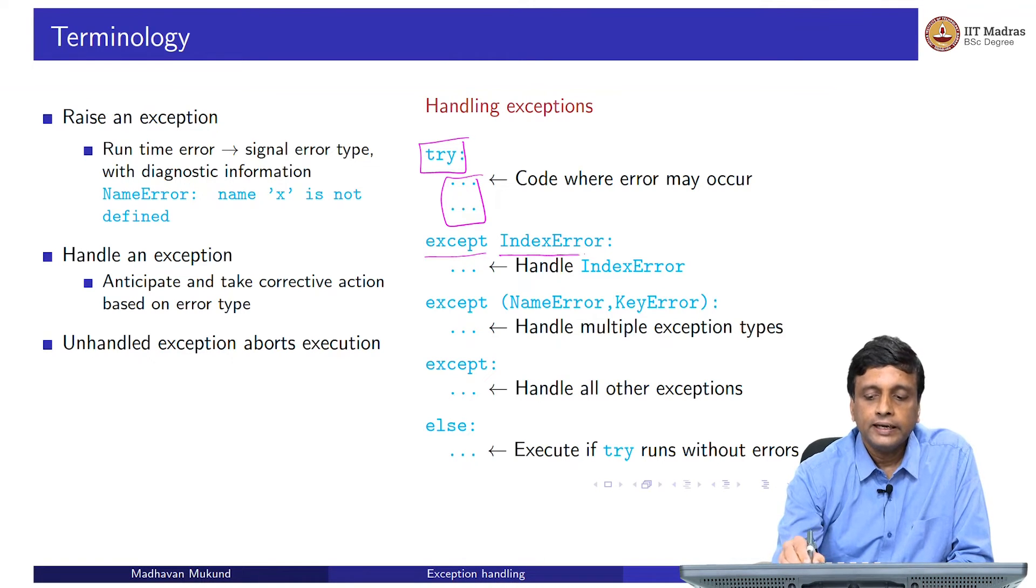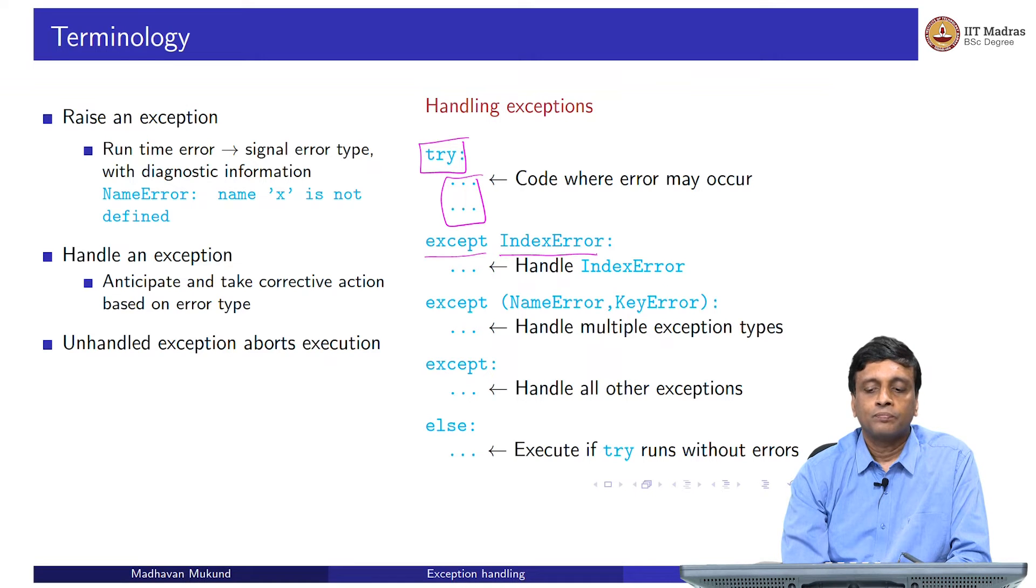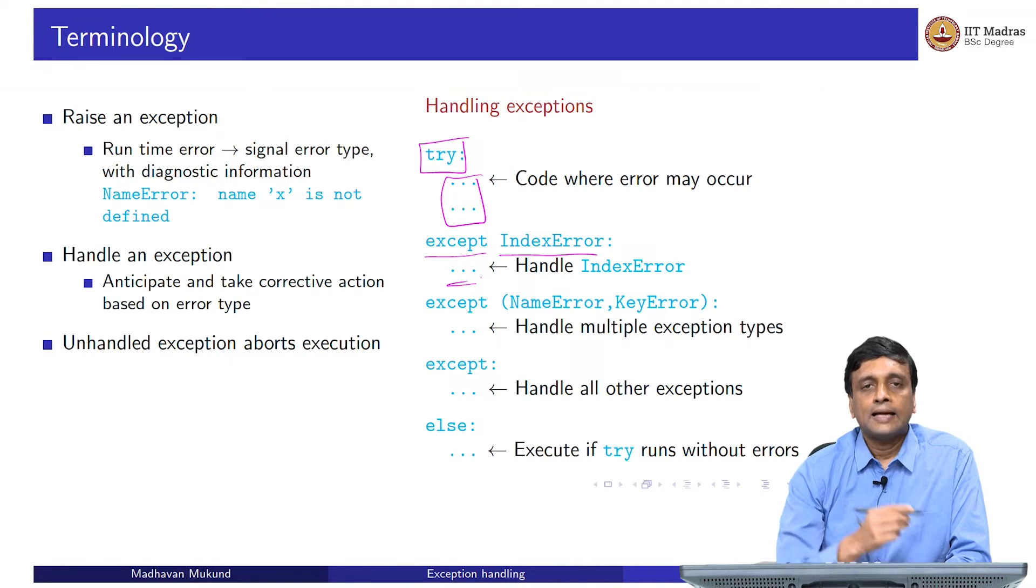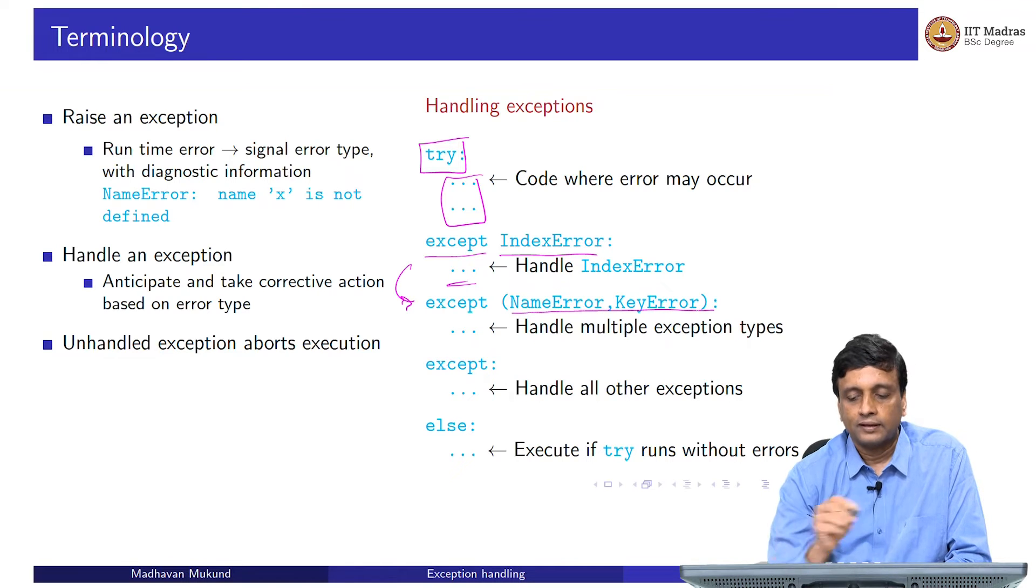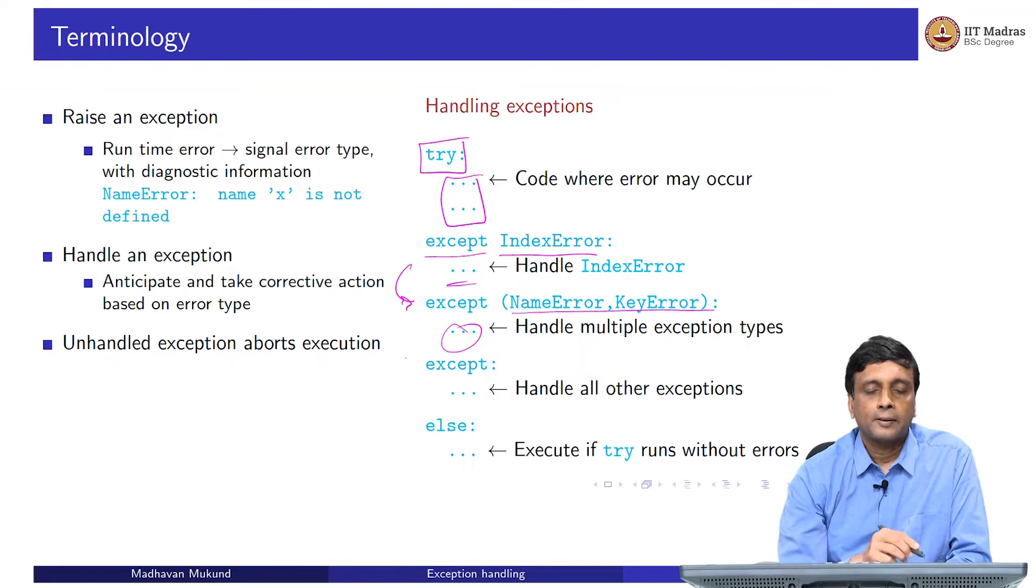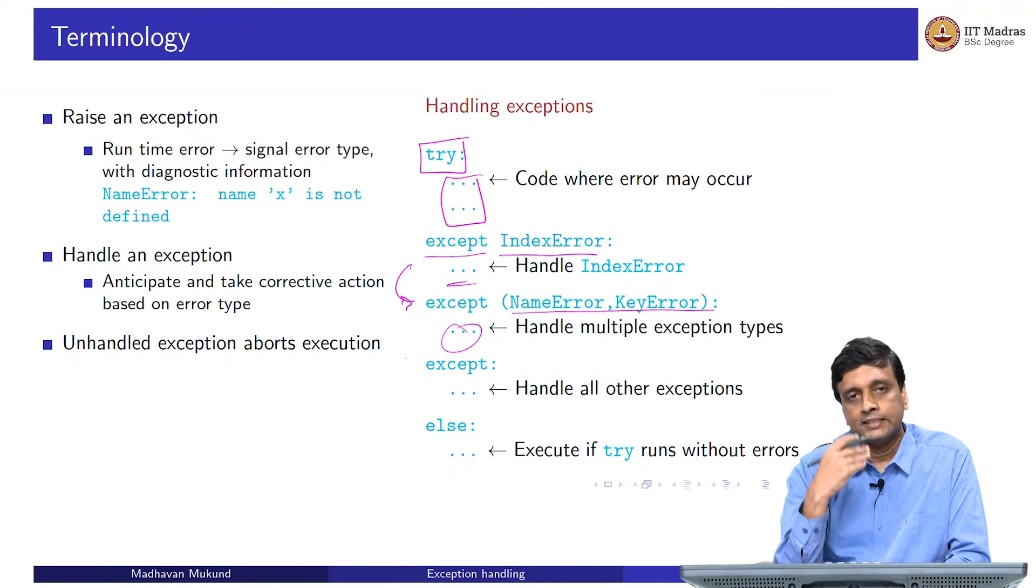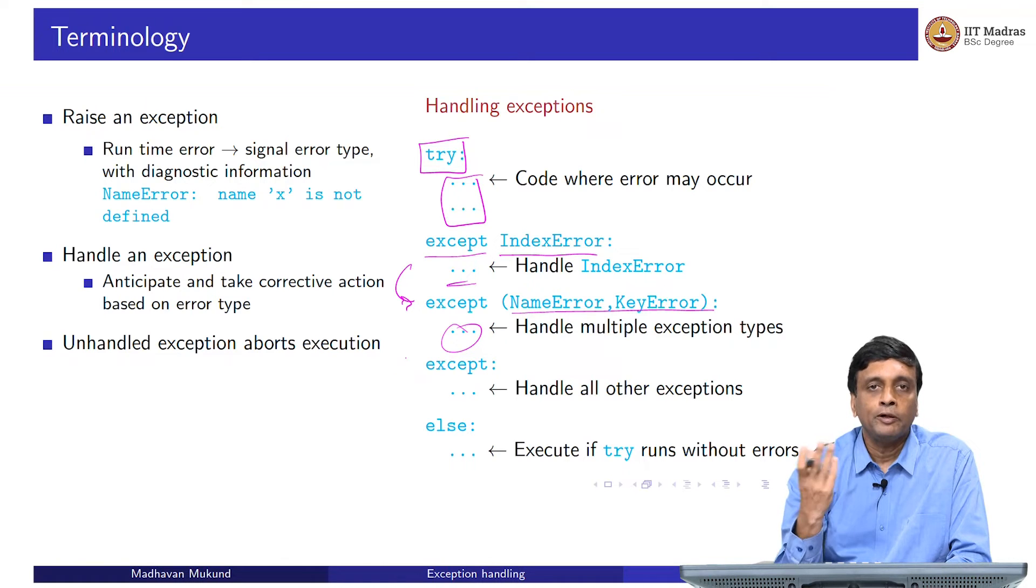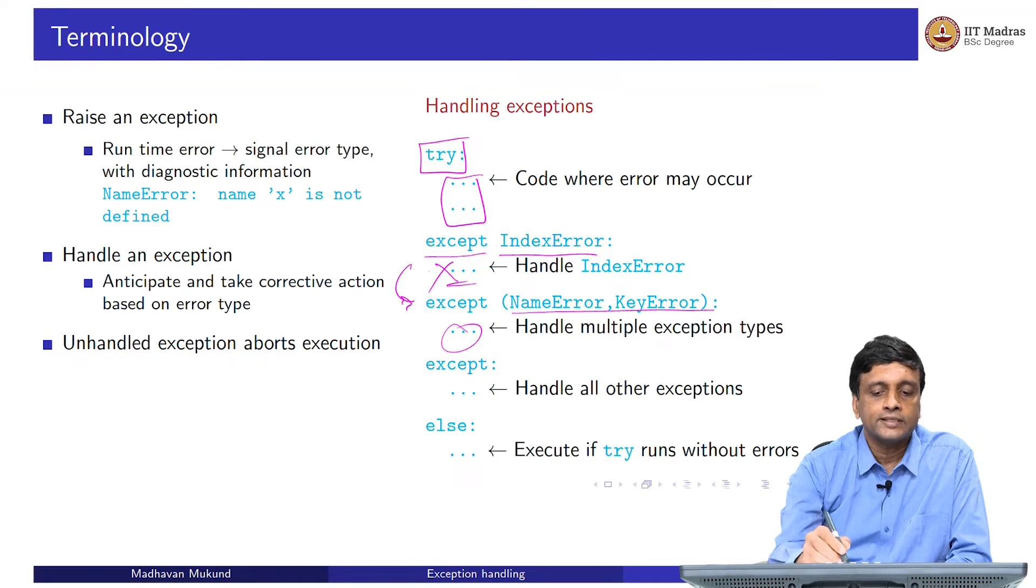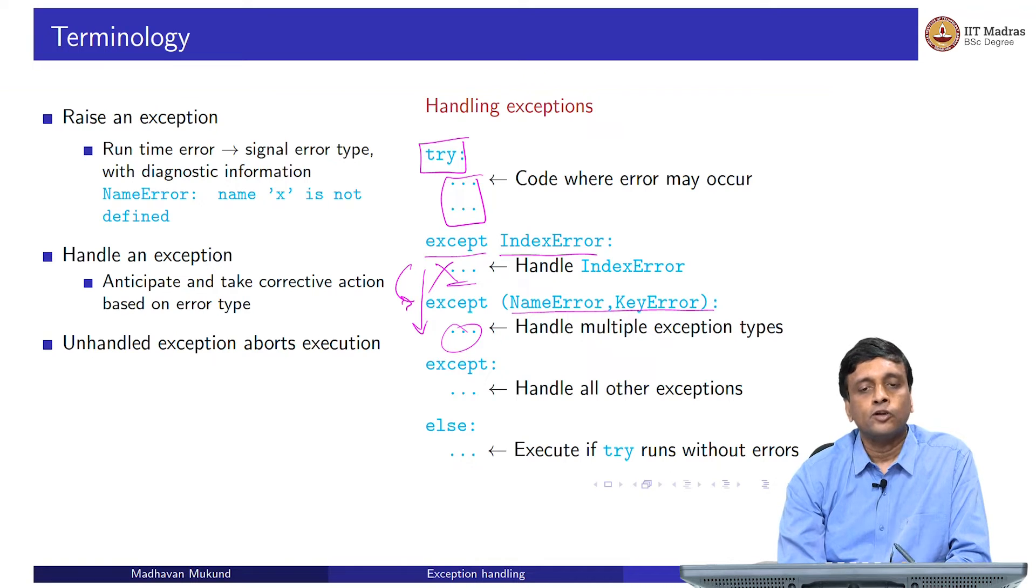With except there is an indicator about what exception or what error we are handling. If the code generates an index error, then we will execute this code. It happens in sequence. If it is an index error, it will come in, if it is not an index error, then this code will not apply. So, it will go to the next line and see is there any other except. The same except can handle more than one thing. This is saying if it is an index error, the first one happens. But if it is a name error or a key error, then do this. We could have the same exception handling code handling more than one type of error. These things are checked in sequence. It will first check for index error. Remember, the error will only be of one type. An error comes to us, it is of one type. If it is an index error, it will match this block. If it is not an index error, it will not look at this at all, it will directly come to this.